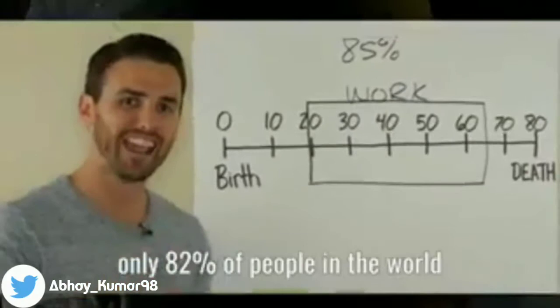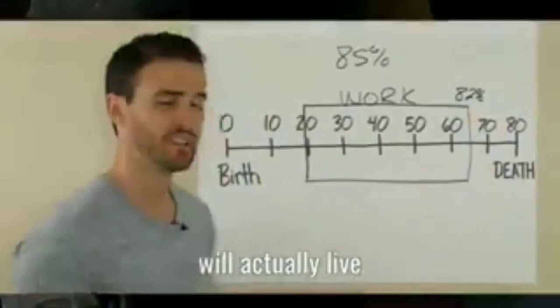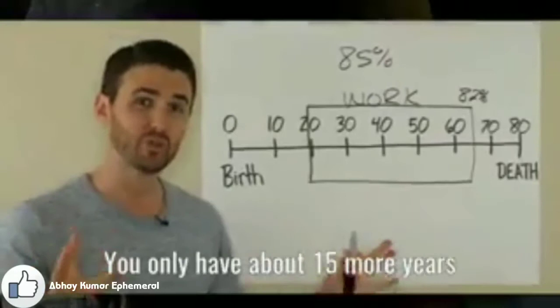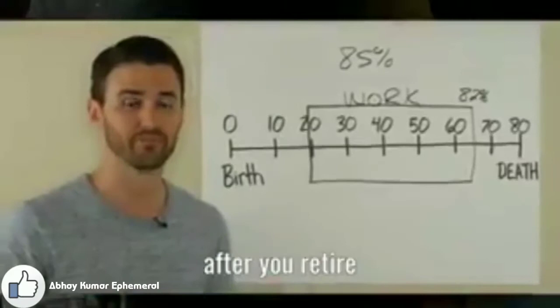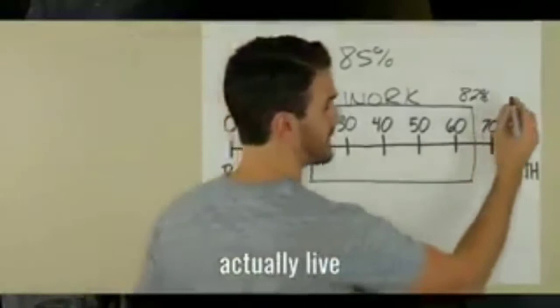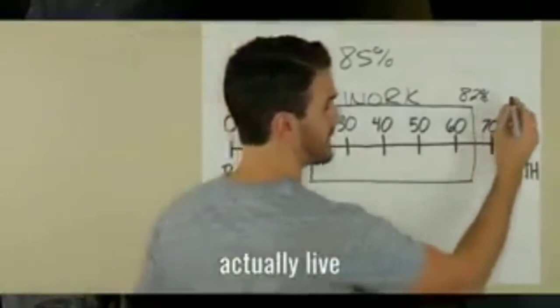Because only 82% of people in the world will actually live to the age of 65. And if you get to 65, on average, you only have about 15 more years left to live after you retire. And also so you know, only 65% of people actually live into the age of 80.